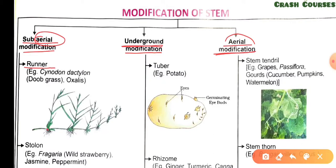The first sub-aerial type is runner stems. In these stems, roots develop towards the lower side and leaves towards the upper side from the nodes. Examples are Cynodon dactylon, that is doob grass. To remember doob grass, the trick is: as we run on doob grass — so doob grass stem is of runner type.